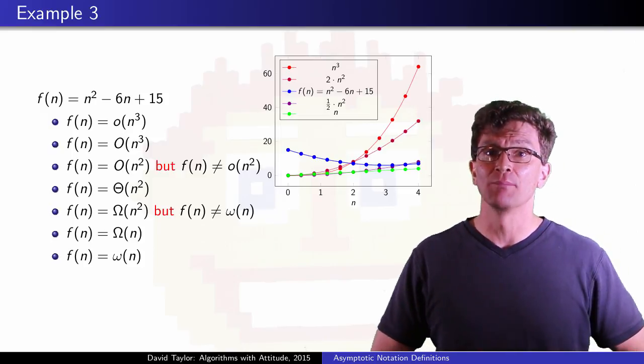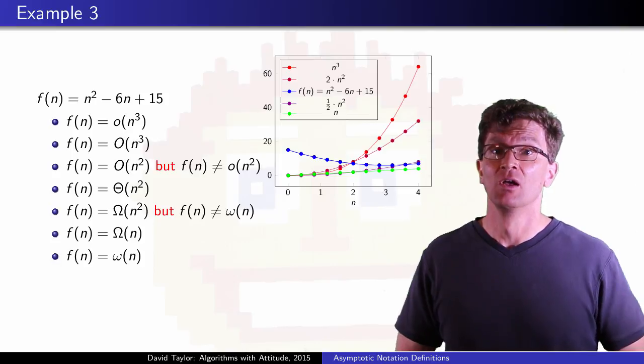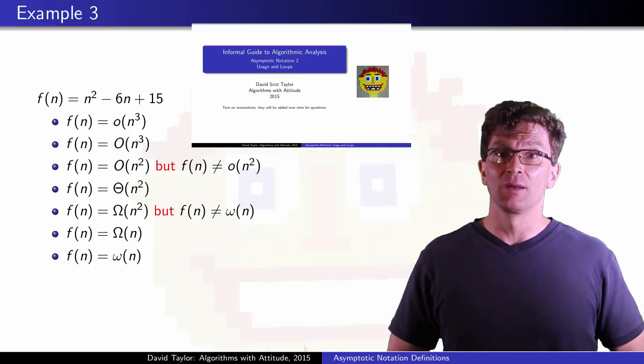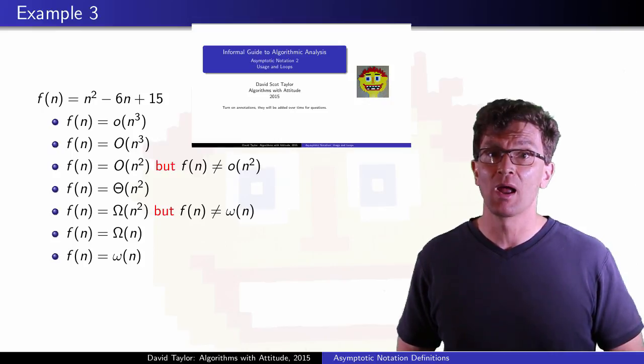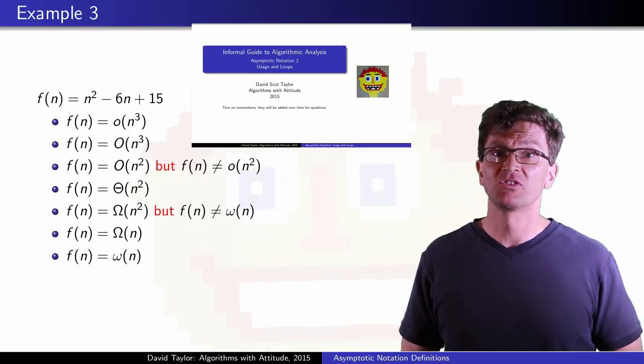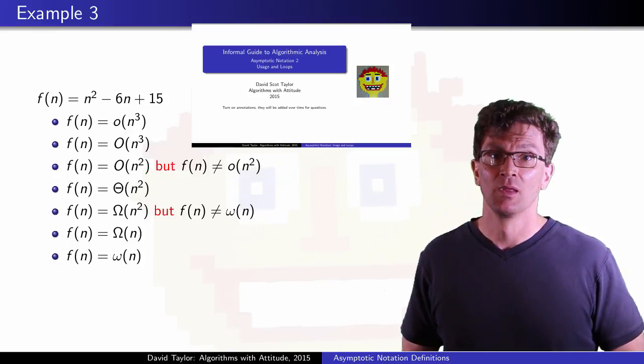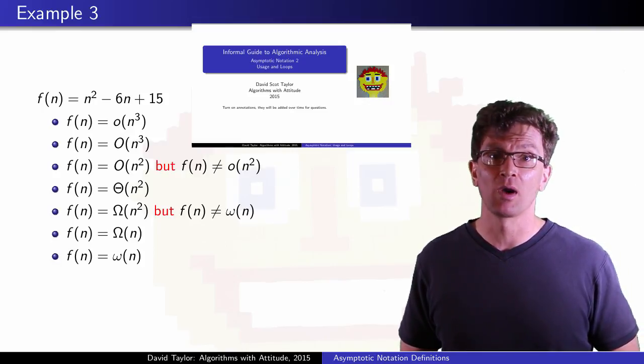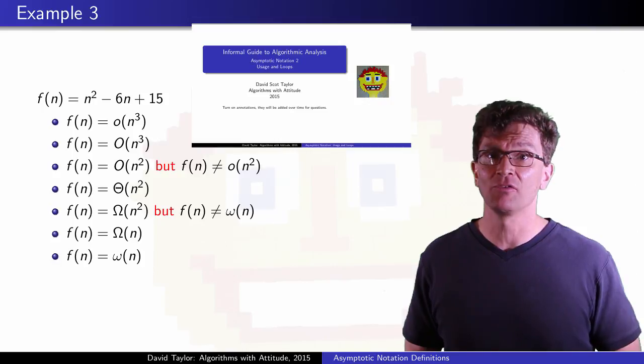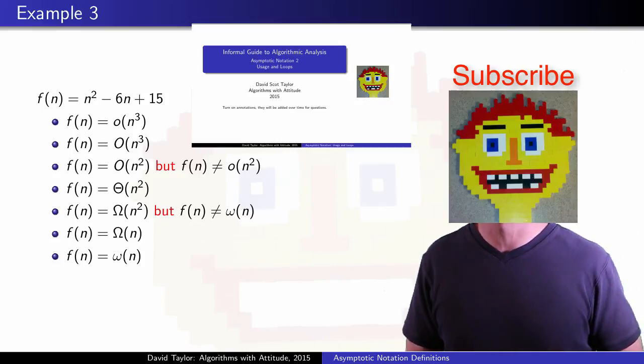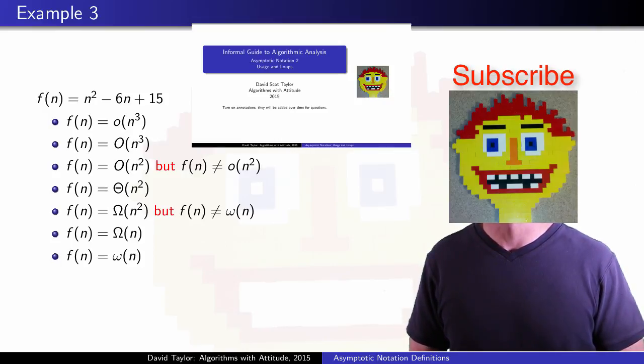This video has really been about the mathematical definitions for our asymptotic functions. The next video will start on applying those definitions to programs, algorithms, and problems, with some examples on simple programs and some loops. Then I'll get into recursive program analysis, and there will be several videos on how to solve the recurrence relations that come up there, but for now, I need to get my back waxed. Who writes this stuff?